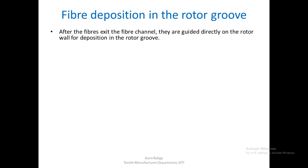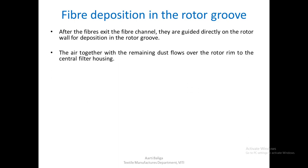After the fibers exit the fiber channel, they are guided directly onto the rotor wall for deposition in the rotor groove. The air, together with remaining dust, flows over the rotor rim to the central filter housing. The remaining air coming out of the fiber channel flows over the rotor rim and goes to the central filter housing.